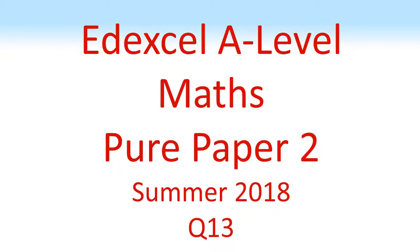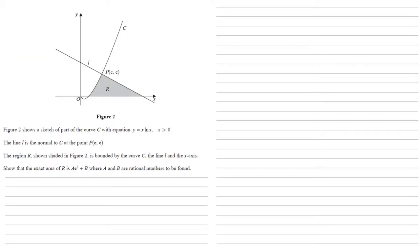Edexcel A-Level Maths, Pure Paper 2, Summer 2018, Question 13. Figure 2 shows a sketch of part of the curve C with equation y equals x ln x, x larger than 0. The line L is the normal to C at the point P with coordinates e, e.